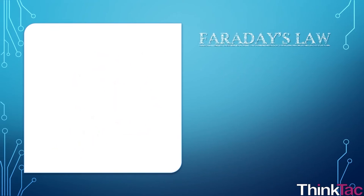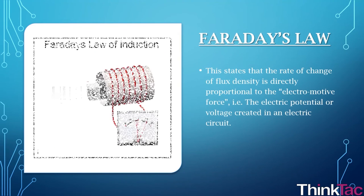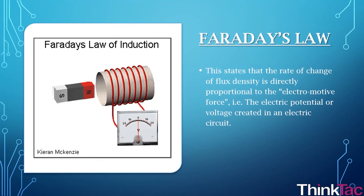Faraday's law. This law states that the rate of change of flux density is directly proportional to the electromotive force, that is the electric potential or voltage created in a circuit that is experiencing this change. An electromagnet is, again following on from Ørsted's law, a current carrying conductor becomes a magnet or an electromagnet.